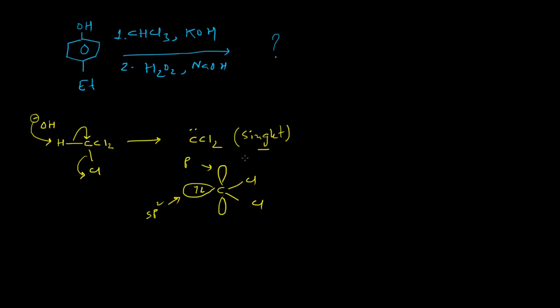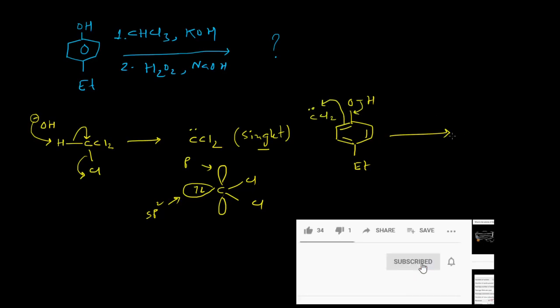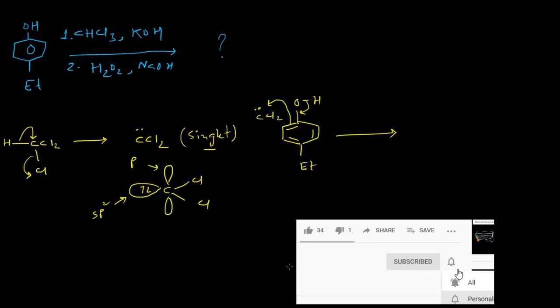That's why when this dichlorocarbene is generated in the reaction medium, this phenol will attack this dichlorocarbene intermediate. Since this para position is already blocked by this ethyl group, either of these two ortho positions will be attacked by the dichlorocarbene.